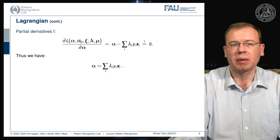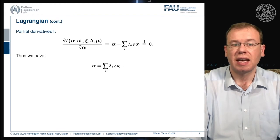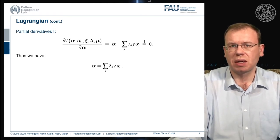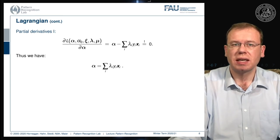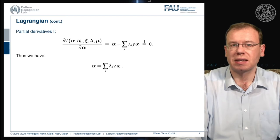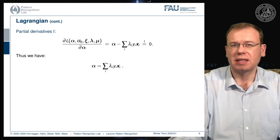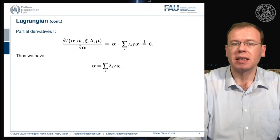Computing the partial derivative of the Lagrangian with respect to alpha gives alpha minus the sum of λᵢyᵢxᵢ, which must equal zero. Solving this yields alpha equals the sum of λᵢyᵢxᵢ. This seems familiar — similar to the perceptron update rule where yᵢxᵢ is an update step. Here, summing over the entire training dataset, we can express the primal variable alpha completely in terms of the training data and our Lagrange multipliers.